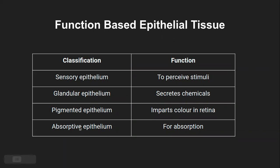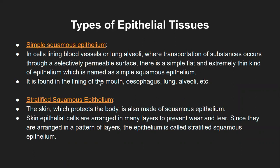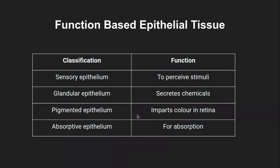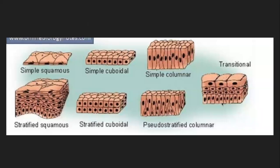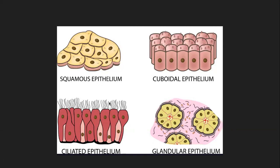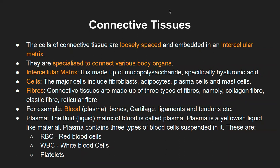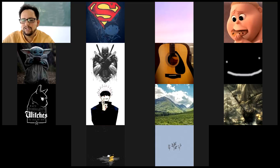The last type based on function is absorptive epithelium, which is used for the absorption purpose — the intestine, stomach, and similar organs. So those were the four structure-based types and the function-based types — they ultimately overlap with each other. This diagram is kept here just to show how the ciliated epithelium looks — these are the columnar epithelial cells which have cilia-like structures. In the respiratory tract, to allow the movement of mucus, these ciliated structures are present in the tracheal-like structure. Connective tissue will start in the next class.